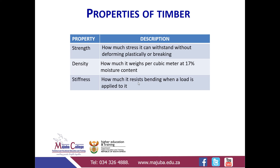Stiffness is defined as how much it resists bending when a load is applied to it. The difference between strength, density, and stiffness: for your timber to carry a heavy load, it must have a certain moisture content, but it doesn't need to be thick. But if your timber has lost that 17% moisture content, then your timber must be thick — which means you need the property called stiffness. Because it will carry a load, but once it bends, it breaks.